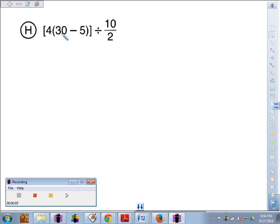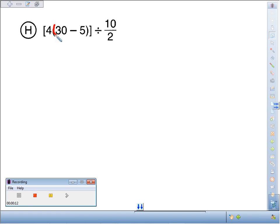So grouping symbols, let's work in the innermost grouping symbol first. So 30 minus 5, that's going to be 25. So really we've got bracket 4 times 25, all divided by 10, divided by 2.